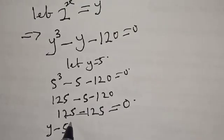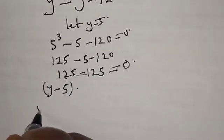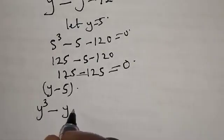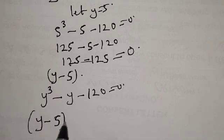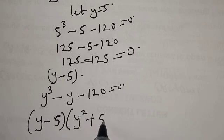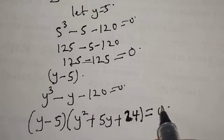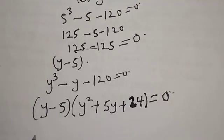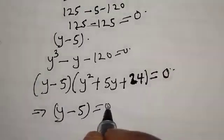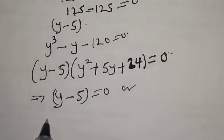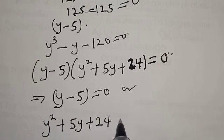So therefore y minus 5 is one of the roots. This implies that from y raised to power 3 minus y minus 120 equals 0, we have y minus 5 times y squared plus 5y plus 24 equals 0. This gives us two cases: y minus 5 equals 0, or y squared plus 5y plus 24 equals 0.